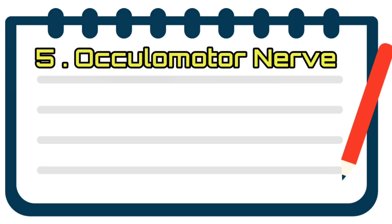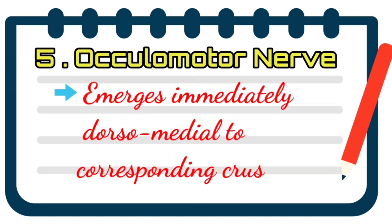And the fifth content is oculomotor nerve which emerges immediately dorsomedial to corresponding crus. These are all of the contents.